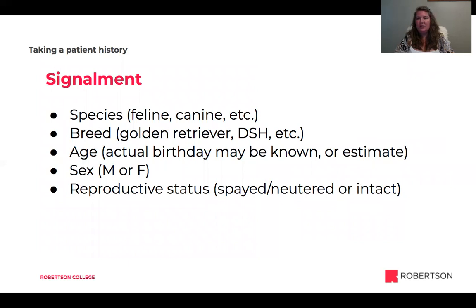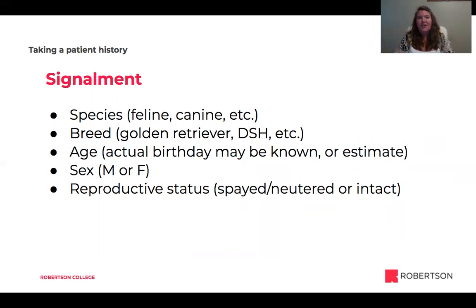One of the first things we gather is the signalment. You might hear reference to the signalment when talking about completing files or setting up new clients. It's all the information about the animal — their stats. So their species, whether feline, canine, guinea pig, whatever, their breed. Lots of people know their dog breed; lots of people don't know their cat breed.